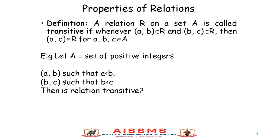Let's understand it with the help of an example. Let A be the set of positive integers, and consider (A, B) such that A < B, and (B, C) such that B < C. Is this relation transitive? The relation is the less-than relation on the set of positive integers. So if the set contains three elements 1, 2, 3, with A = 1, B = 2, and C = 3: 1 is less than 2, and 2 is less than 3, so we can say 1 is less than 3. So this relation on set A is a transitive relation.